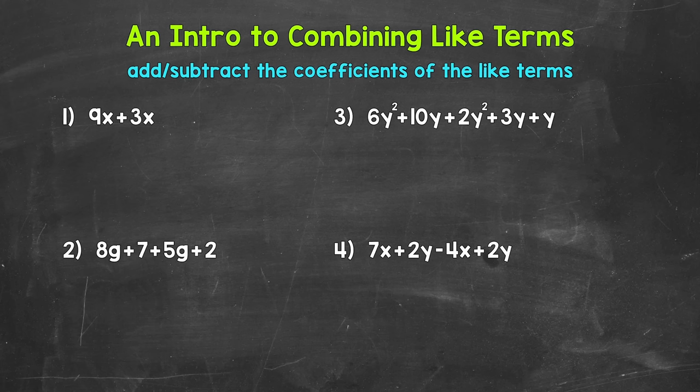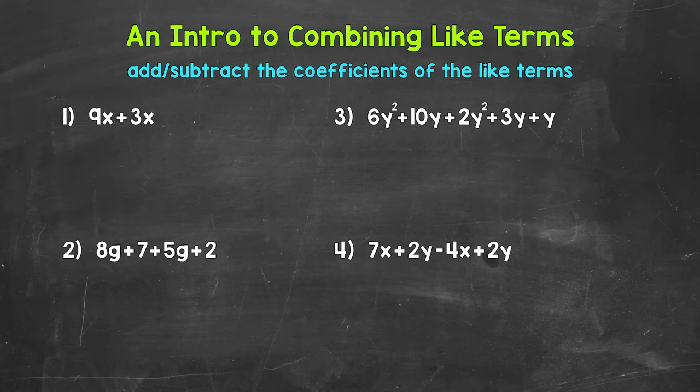Let's jump into number one where we have 9x plus 3x. We will start with this basic expression and work our way up. So we have two terms in this expression: 9x and 3x. Both terms have the same variable of x, and these variables of x are to the same power. Remember, when we don't have an exponent attached to a variable, there is an understood exponent of 1. Anything to the power of 1 is just itself. So 9x and 3x are like terms.